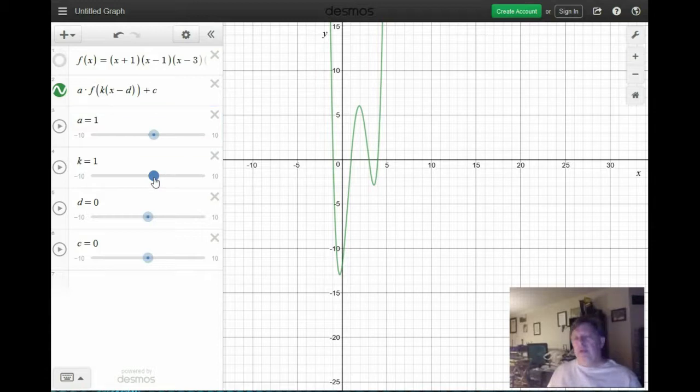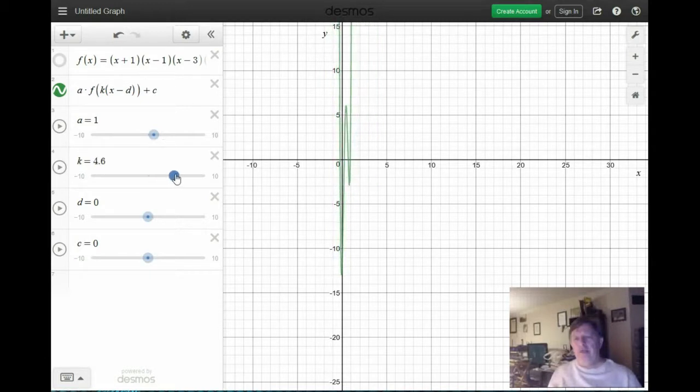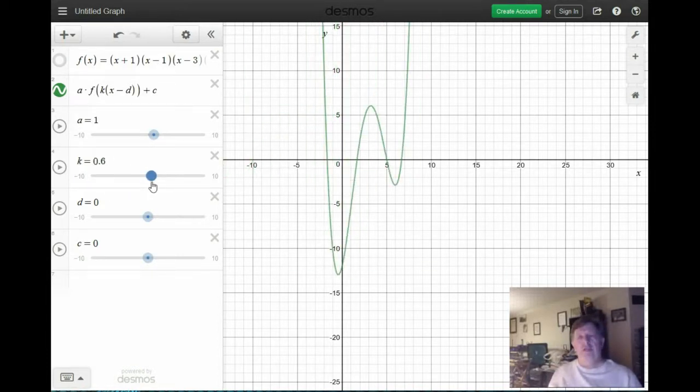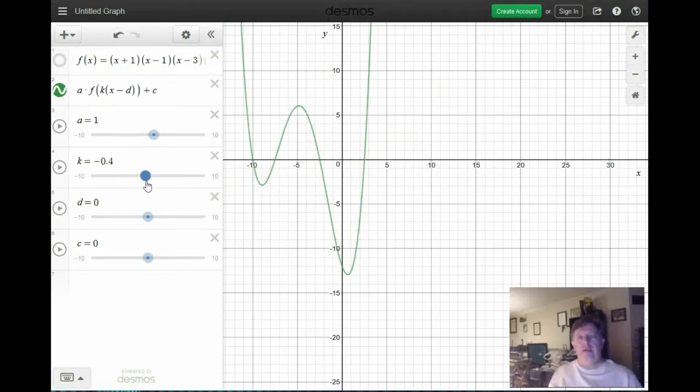Now, k, remember, controls the horizontal compression or horizontal stretch. So a big k tends to make the curve very compressed. And notice that's true also when k is negative and large. And also notice that when k is negative, we get a reflection on the y-axis.